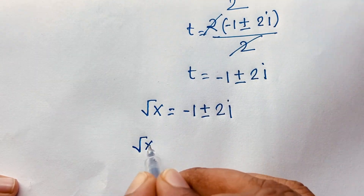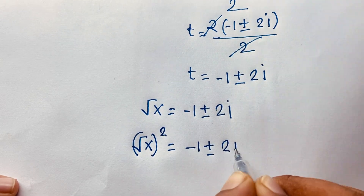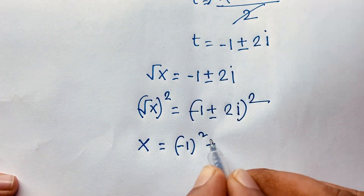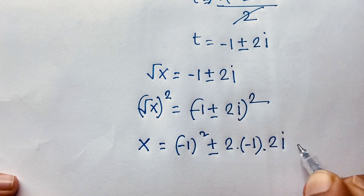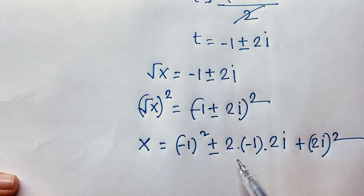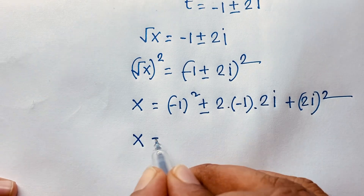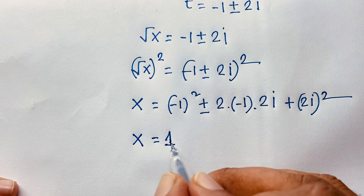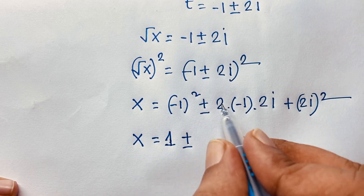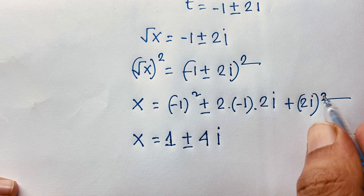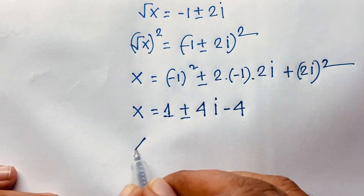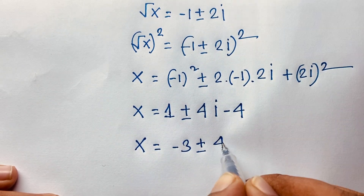Squaring both sides, x equals negative 1 plus or minus 2i, whole squared. Expanding using a plus or minus b whole squared gives 1, plus or minus 2 times negative 1 times 2i, plus 2i squared. Since i squared equals negative 1, the term 2i squared gives 4 times negative 1 equals negative 4. So x equals 1 plus or minus negative 4i — wait, simplifying: x equals negative 3 plus or minus 4i. This is a complex solution.